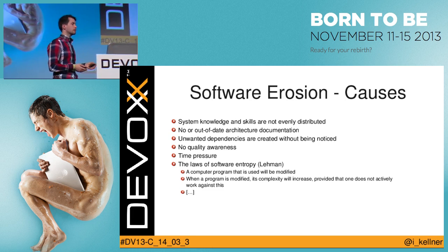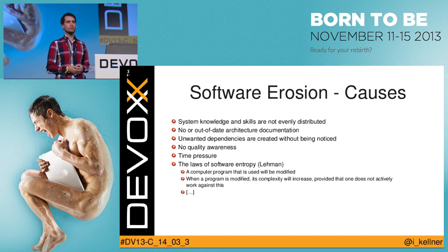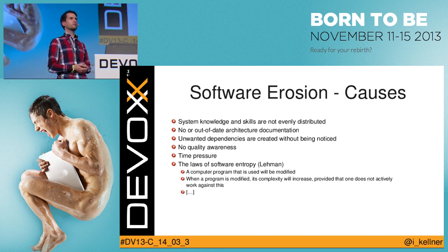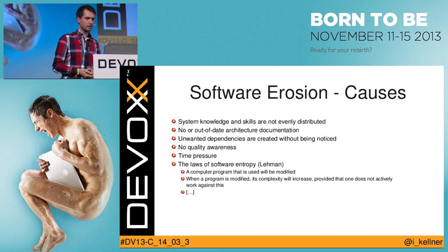Another problem is architecture documentation. Sometimes it exists, but most of the time it's not up to date. Maybe a quick poll: who would say they have up-to-date architecture documentation in their project? About 5% of the audience. I take that as agreement that you see this as a problem yourselves.